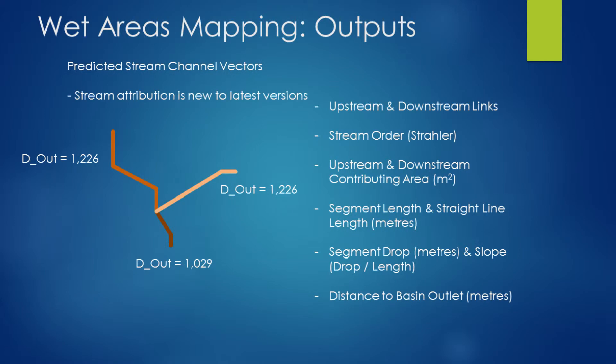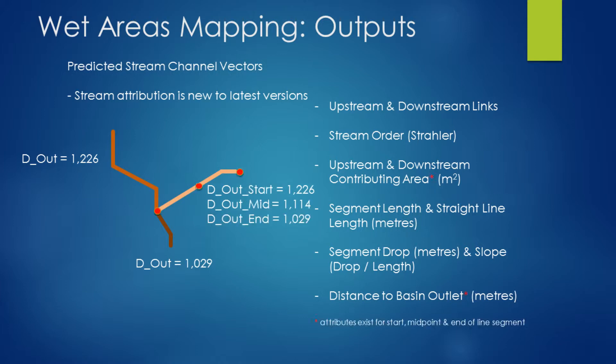Additionally, we have distance to basin outlet — the distance from every one of these vectors to the outlet, which tends to be towards the edge of a LiDAR tile. This is useful for estimating time to travel from every single point within the vector to the tile outlet. Since applying a single value to each vector covers every single one-meter cell in the landscape, we've provided upstream and downstream contributing areas as well as distance to outlet from the start, middle, and end of each vector to offer more useful information.